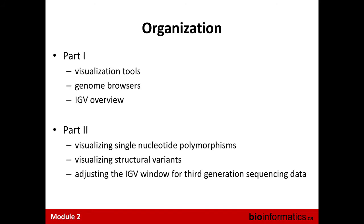The general organization of this module is Part 1, where we go over visualization tools, the different kinds of genome browsers, their advantages and disadvantages, and IGV itself. For Part 2, we'll cover variant inspections of single nucleotides and structural variants, and how to adjust your window for PacBio sequencing specifically, although it's similar to Oxford Nanopore.